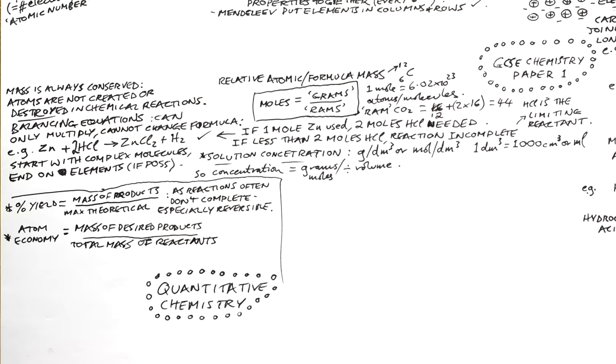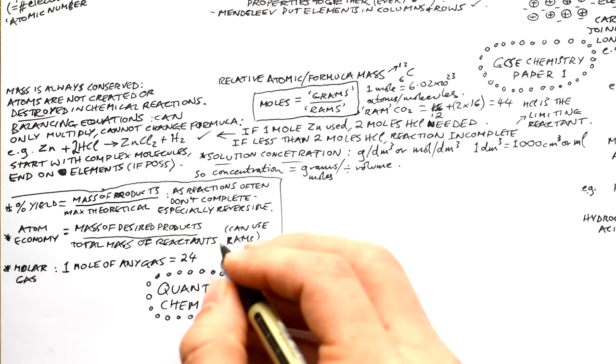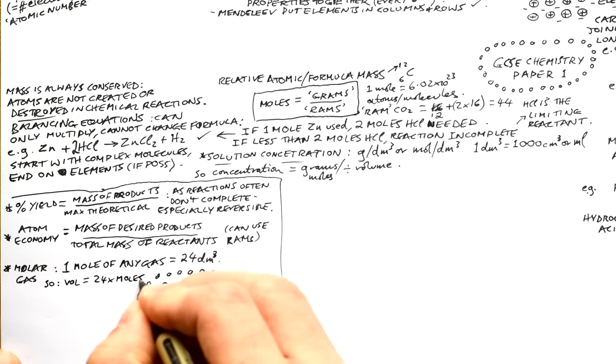Molar gas volume: it doesn't matter what kind of gas you have — one mole of any gas always occupies 24 dm³ at room temperature. So to find the volume of a gas, just take the number of moles and multiply by 24. Moles are useful for comparing how much material you need versus how much you get out.